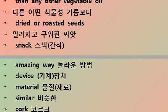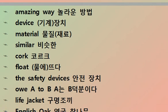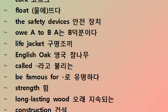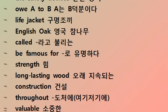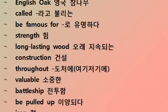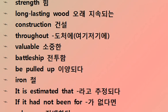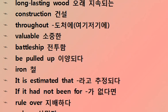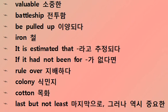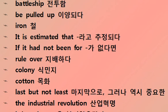An amazing device made of material similar to cork could float — the safety device, a way to be a life jacket. The English oak, also called simply English oak, was famous for its strength and long-lasting wood, used in construction throughout the ages. Valuable battleships were built from it, and iron was pulled up with it.